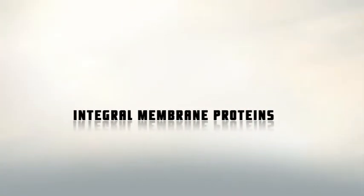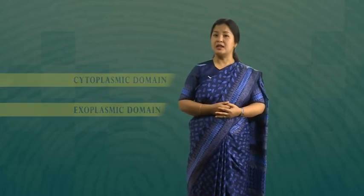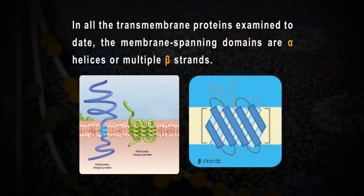Let's look at the integral membrane proteins first. These proteins are also called intrinsic proteins. Most of them span the phospholipid bilayer and have one or more segments that are embedded in it. Most integral proteins contain residues with hydrophobic side chains that interact with fatty acyl groups of the membrane phospholipids, thus anchoring the protein to the membrane. These transmembrane proteins contain one or more membrane-spanning domains as well as cytoplasmic and exoplasmic domains, extending into the aqueous medium on cytoplasmic and exoplasmic sides of the bilayer respectively. In all the transmembrane proteins examined to date, the membrane-spanning domains are alpha helices or multiple beta strands.